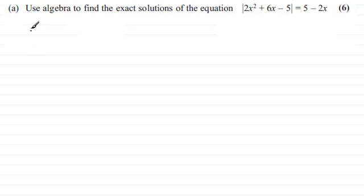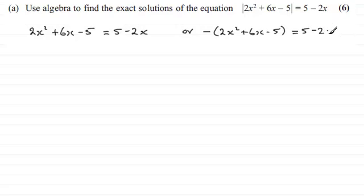We could either have 2x squared plus 6x minus 5, the positive version, equaling 5 minus 2x. Or we could have the negative of this: the negative of 2x squared plus 6x minus 5, that equals 5 minus 2x. From here we can just solve each of these equations and get our particular values of x.